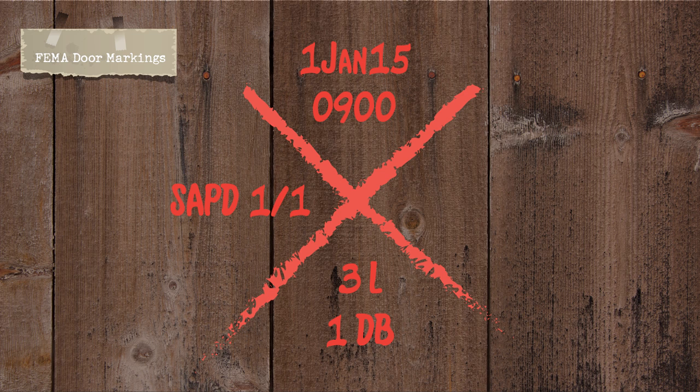After marking casualties or people evacuated, you've completed three of the four quadrants of the marking. The next thing search and rescue teams mark is any hazards in the area — whether that's a natural gas leak, wild dogs, flooding, or electrical wires. It's basically any hazard presented to anyone else entering that building, so follow-up teams aren't going in blind and have some idea of what to expect based on intel gathered by the first team.